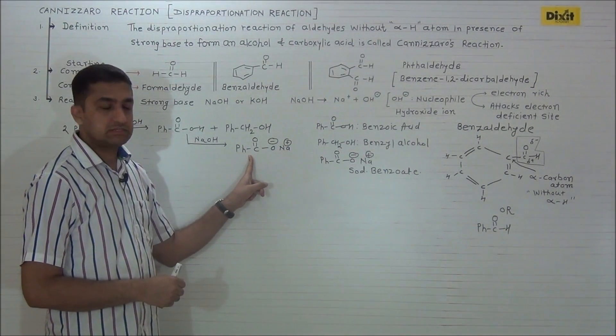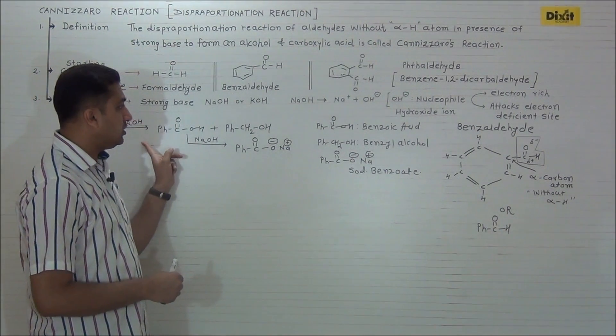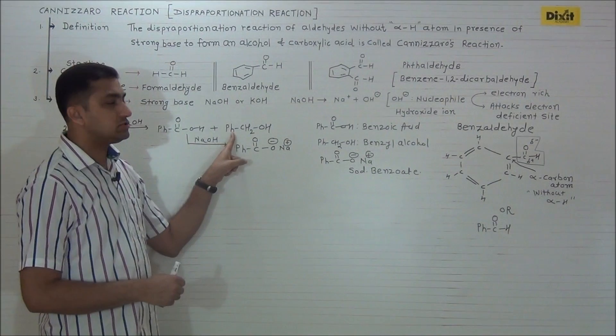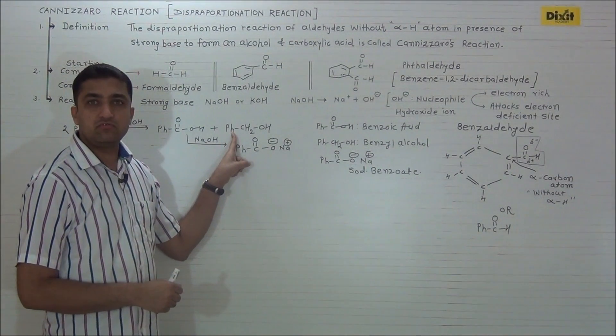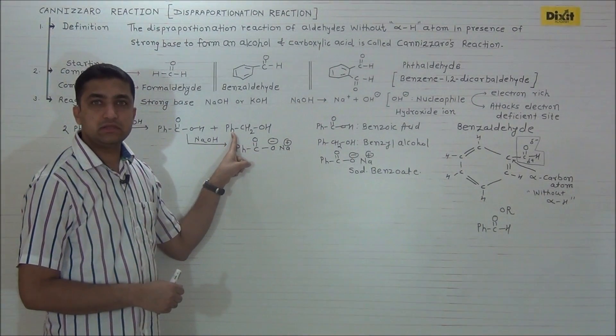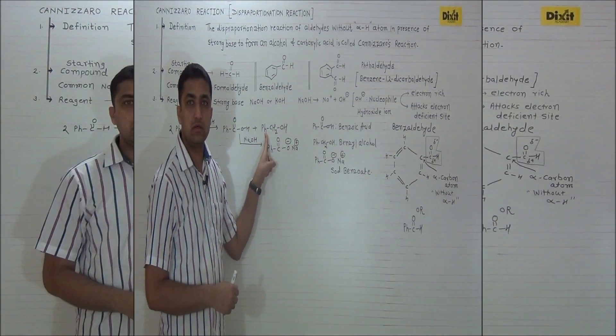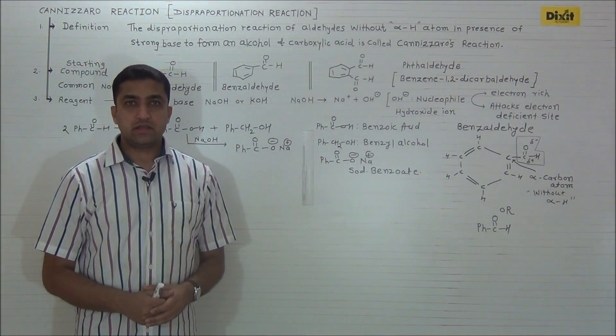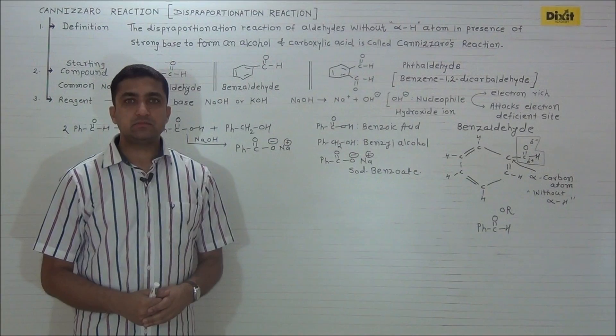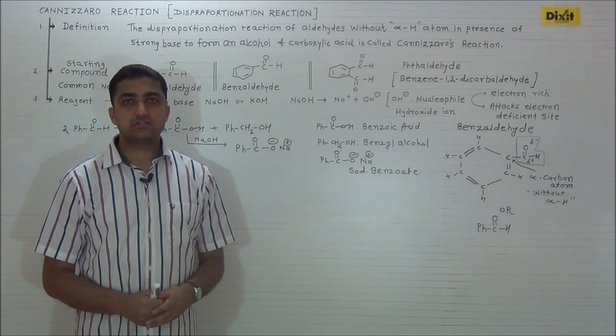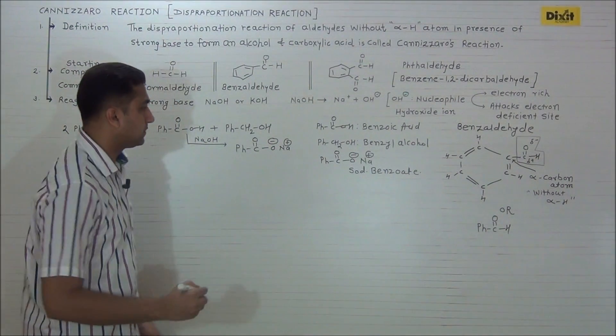In this reaction two molecules are involved: one molecule undergoes oxidation to benzoic acid, and in presence of alkali it forms sodium benzoate; one molecule undergoes reduction to form benzyl alcohol. Let us write the mechanism of Cannizzaro reaction with benzaldehyde.